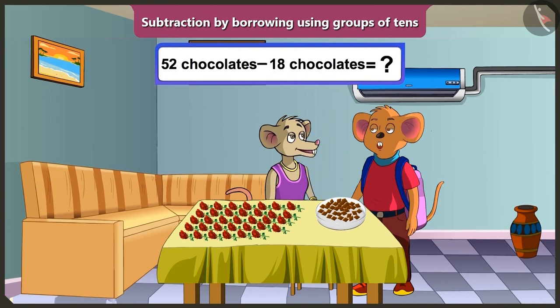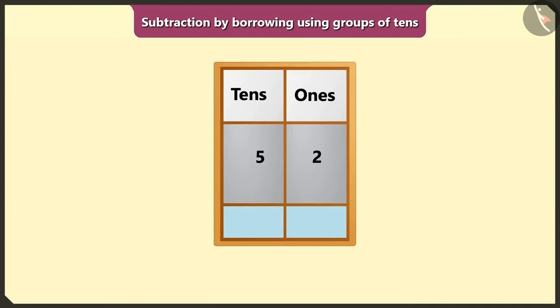Chi-Chi, let's do subtraction after writing 52 and 18 in the box of ones and tens. Yes, let's do it.